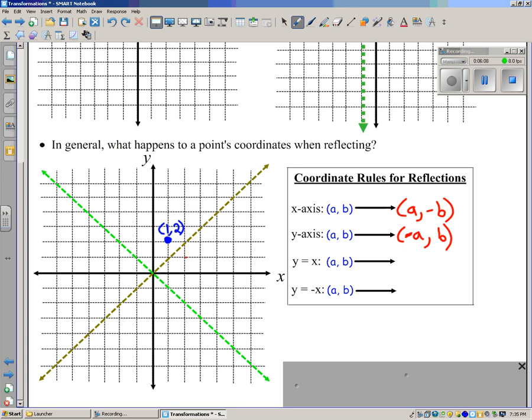Y equals x. 1, 2 becomes 2, 1. What happened? The x and the y swap places. So AB becomes BA.